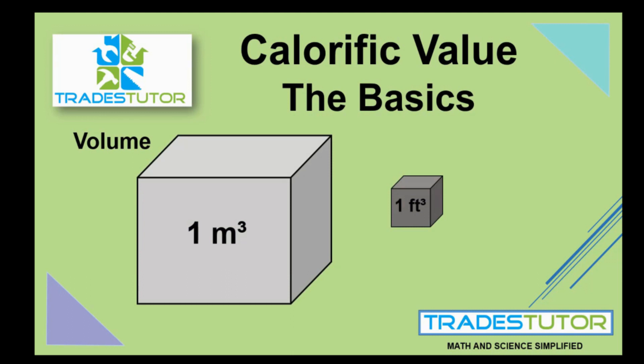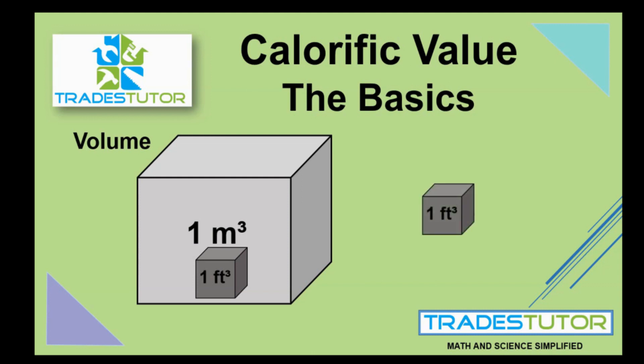Now, this little animation here — these pictures show you that a cubic meter is a lot bigger than a cubic foot, and we know that. But this becomes confusing when we get to calorific values and how to work with it. What you'll see is a cubic foot fits inside a cubic meter. The question is: how many cubic feet fit inside a cubic meter? Well, as it turns out, one cubic meter is equal to 35.31 cubic feet, meaning it's that much larger. So that's our first variable.